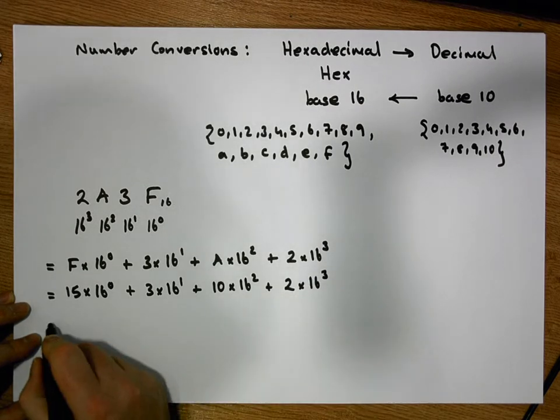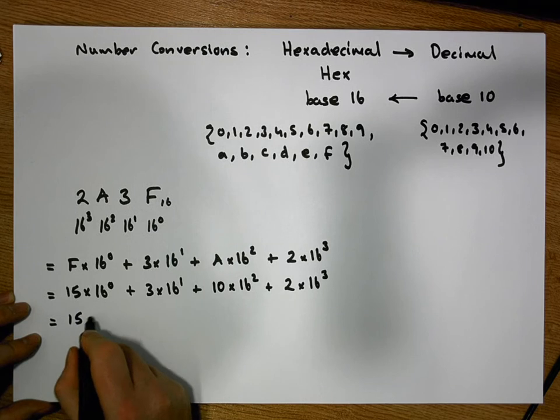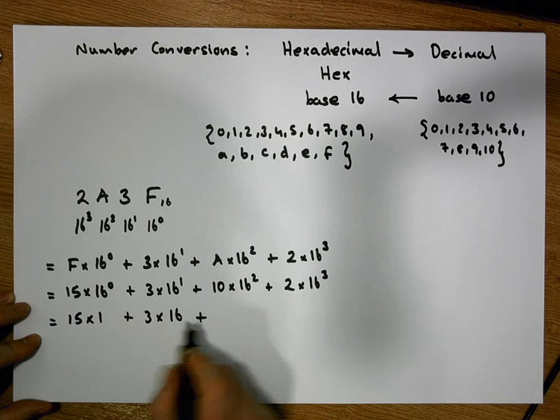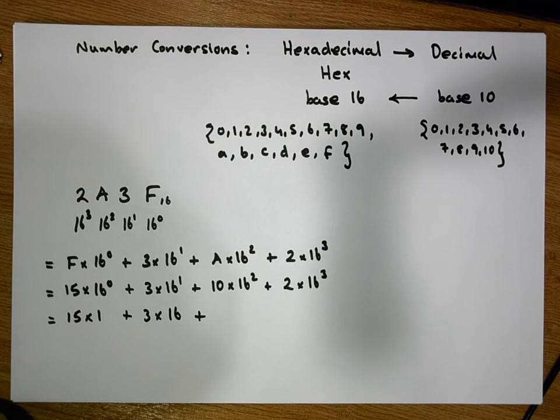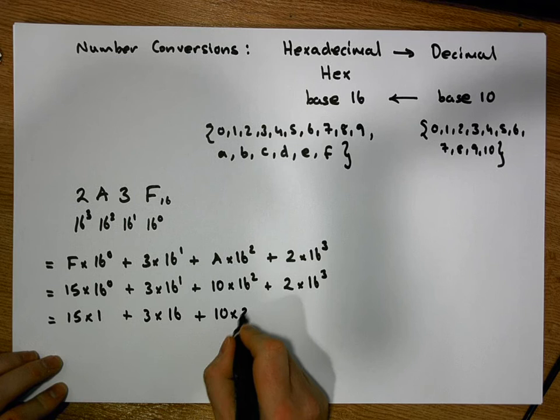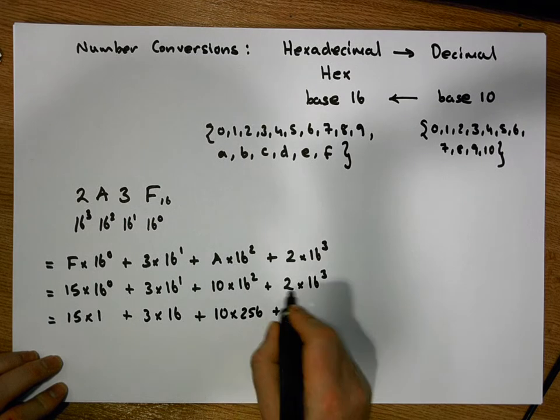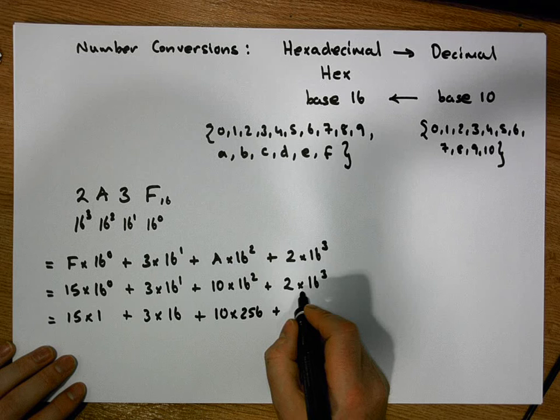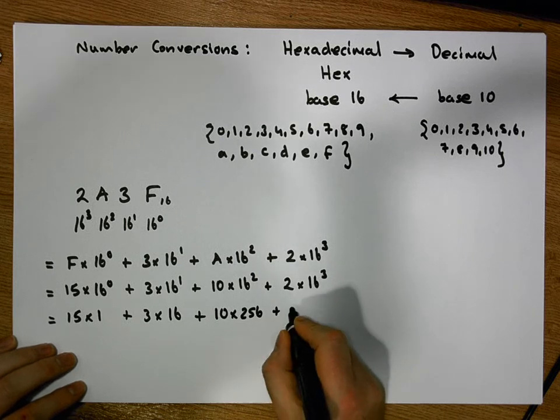Let's convert each one of these powers. So this is 15 times 1 plus 3 times 16 plus, well, 16 squared is equal to 256, so this represents 10 times 256 plus, well, 16 cubed is equal to the value 4096, so this is 2 times 4096.